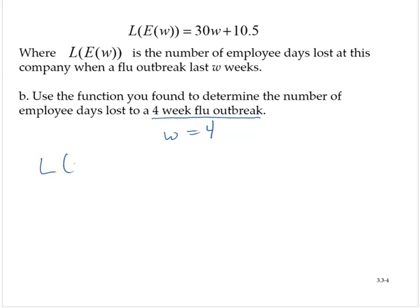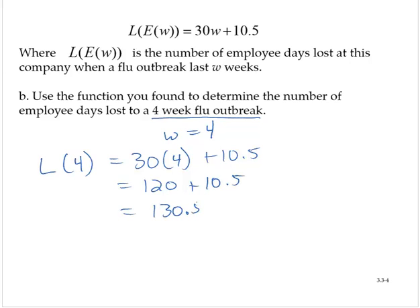So L(4) would be 30 times 4 plus 10.5, which would be 120 + 10.5, which equals 130.5.